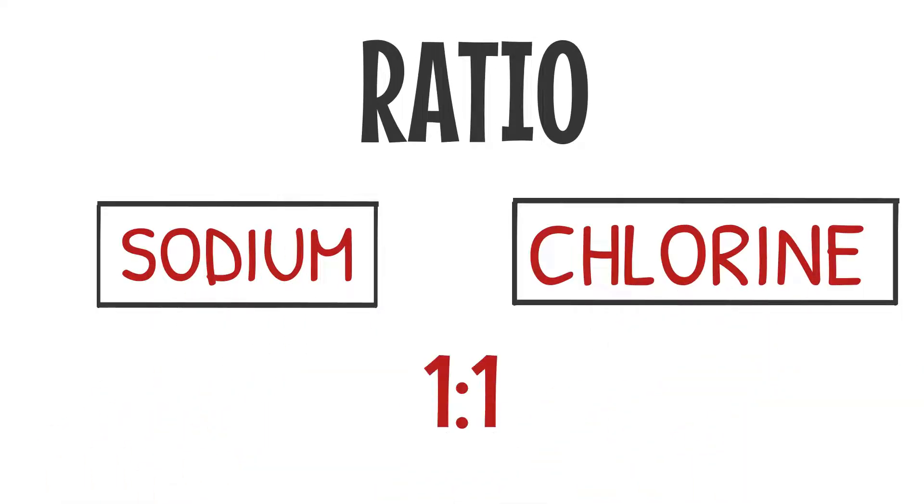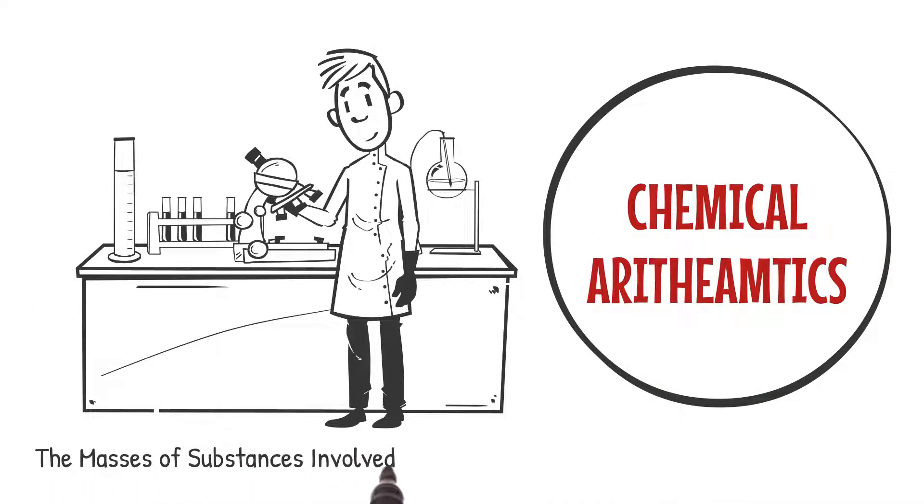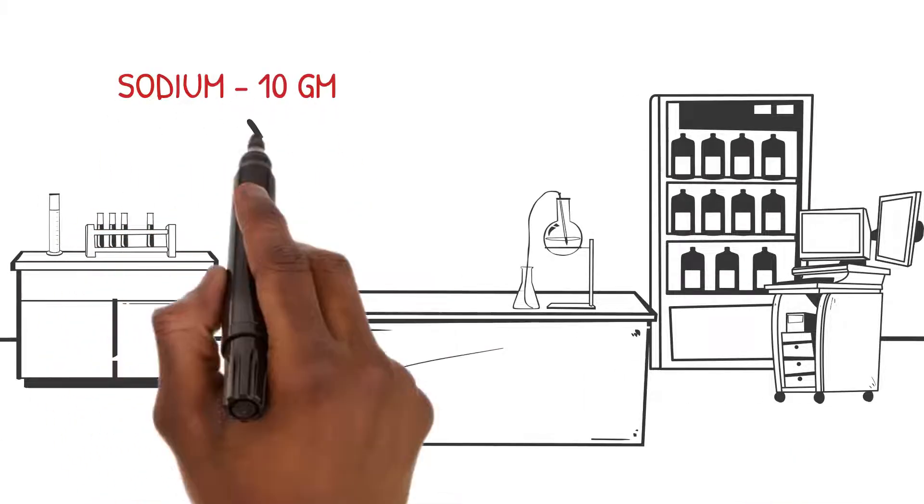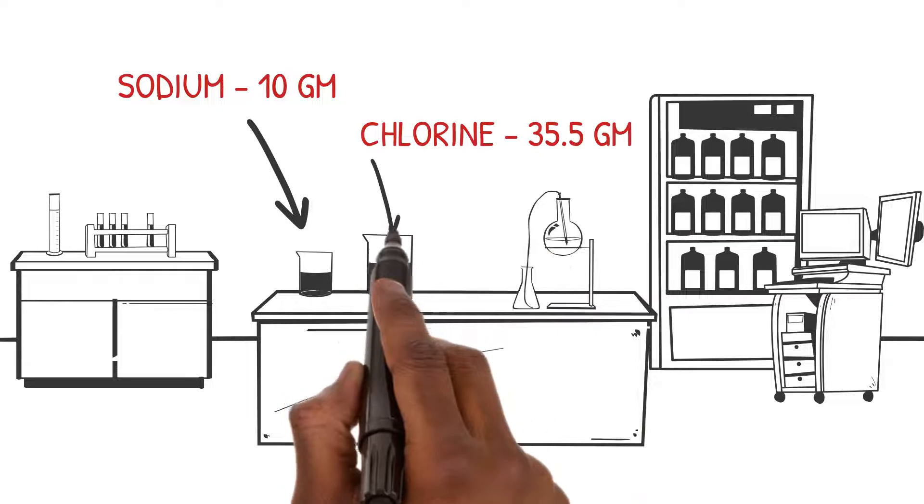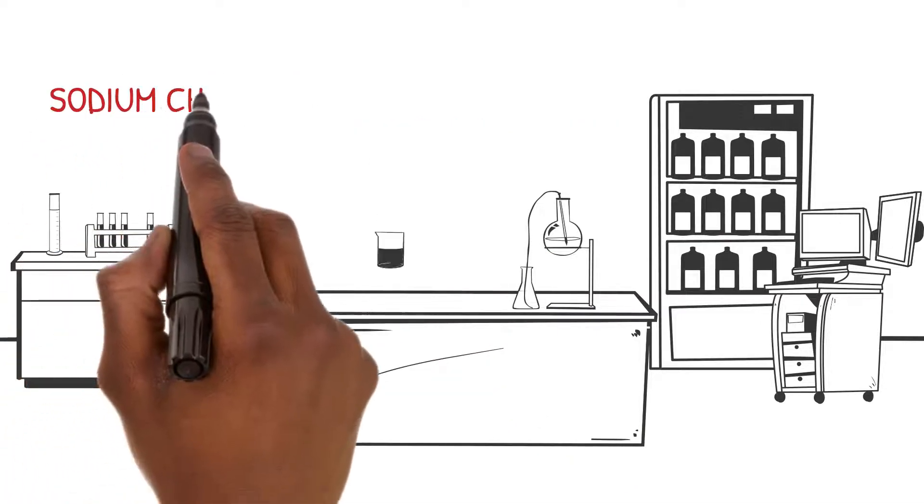Chemical arithmetic helps us predict the masses of substances involved in reactions. Let's imagine we have 10 grams of sodium and 35.5 grams of chlorine. When they combine, we find that the product is 45.5 grams of sodium chloride.